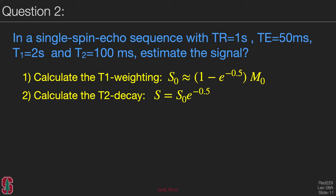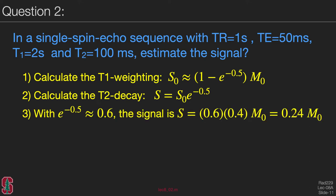We then calculate the T2 decay, which is S0 times e to the minus 0.5, because the echo time is exactly half a T2 time. Approximating e to the minus one-half as 0.6, the signal is 0.6 times 0.4 times the equilibrium magnetization, or approximately 0.24 times the equilibrium magnetization.